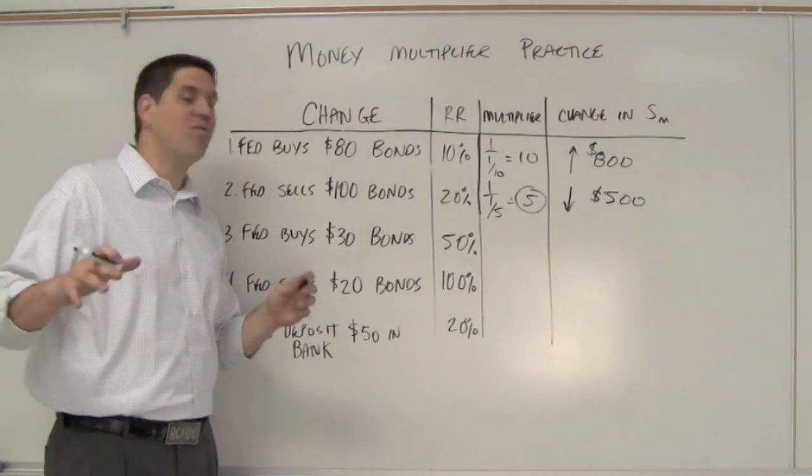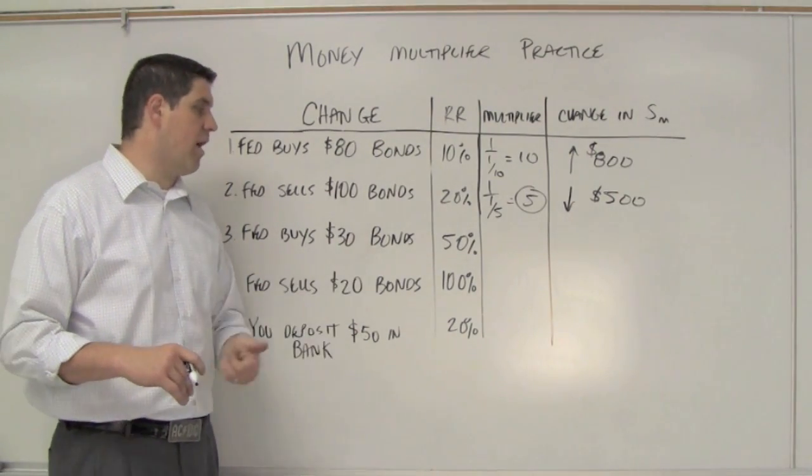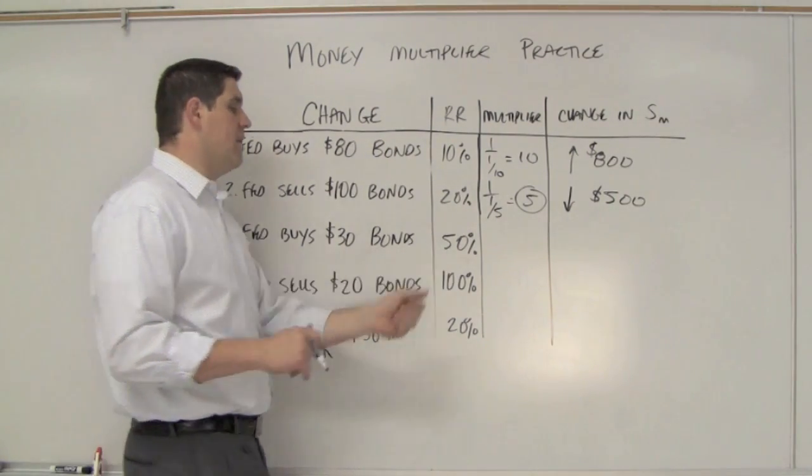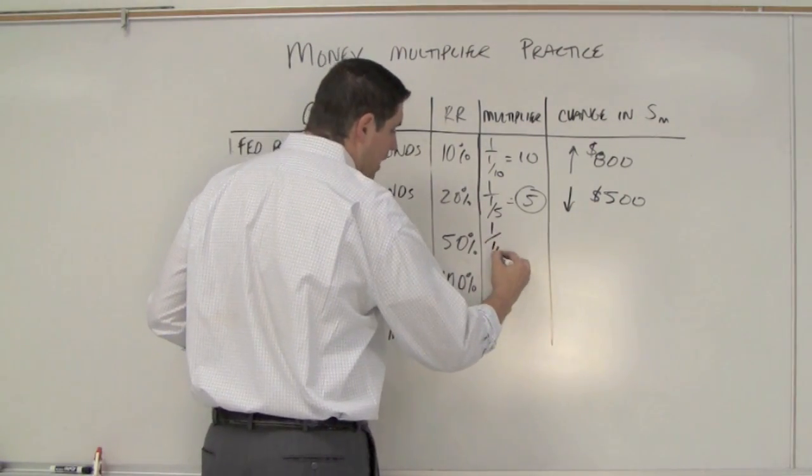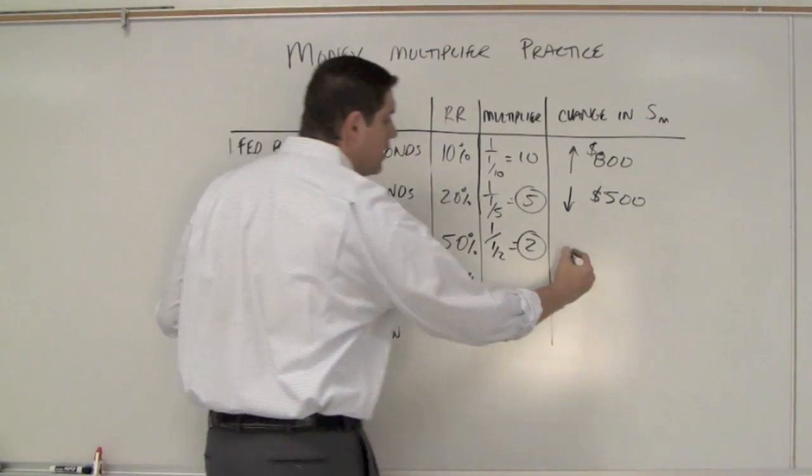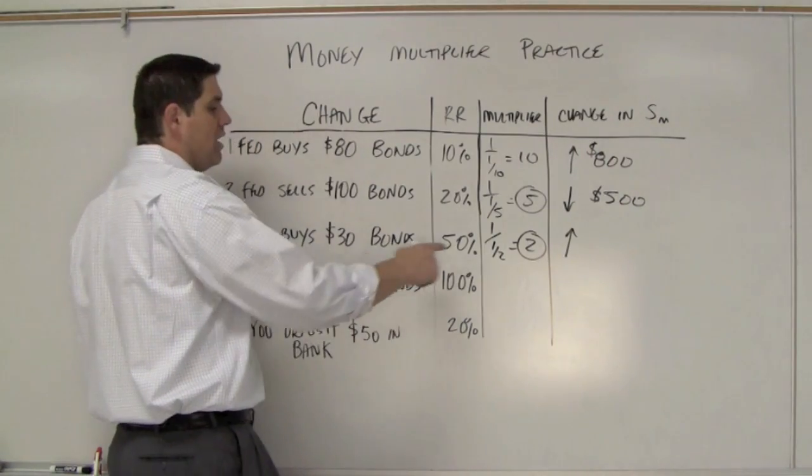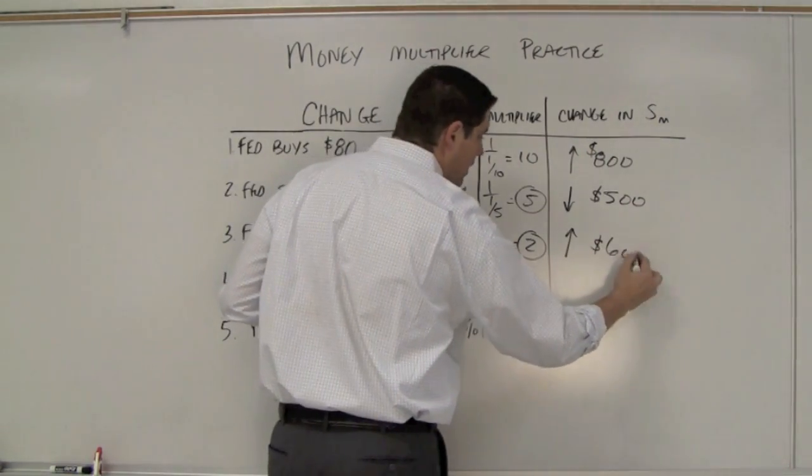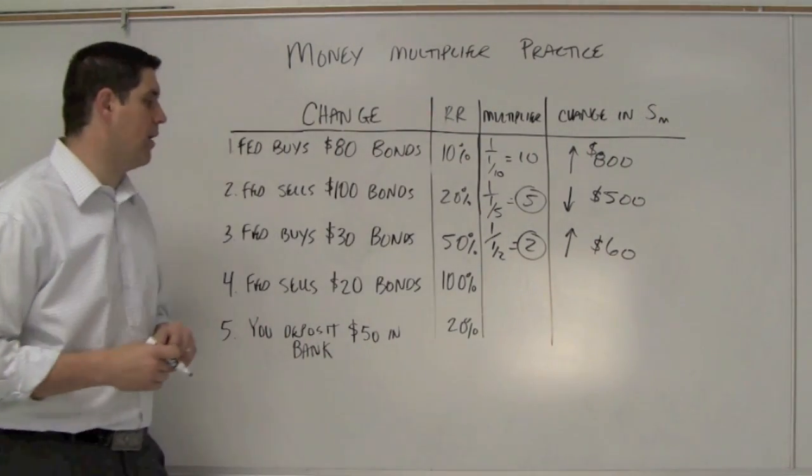What if the Fed buys $30 worth of bonds? The reserve requirement is 50%, so it's 1 over 1/2, so the multiplier is 2. Since the Fed is buying, this would increase the money supply. 30 times 2, the grand total is 60. The increased money supply would be $60.